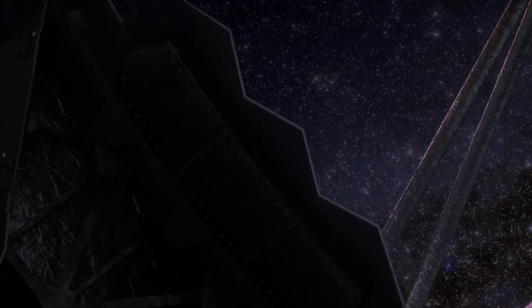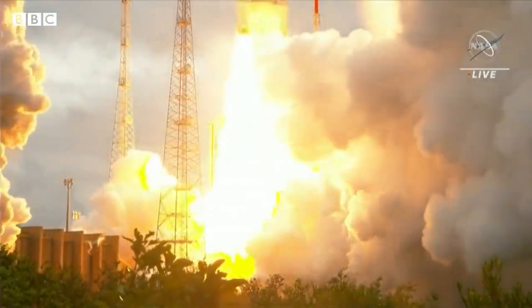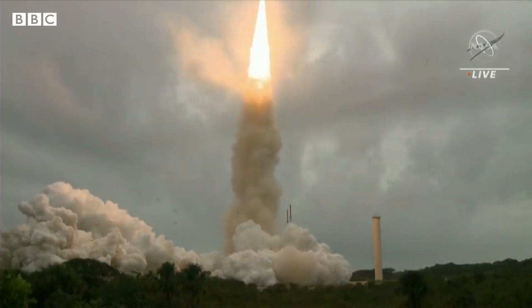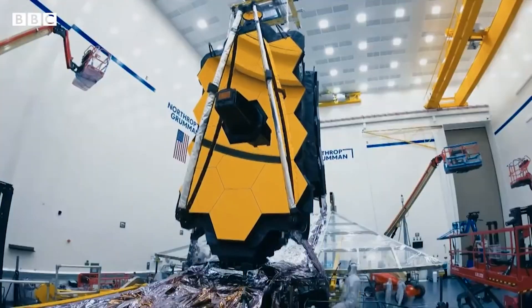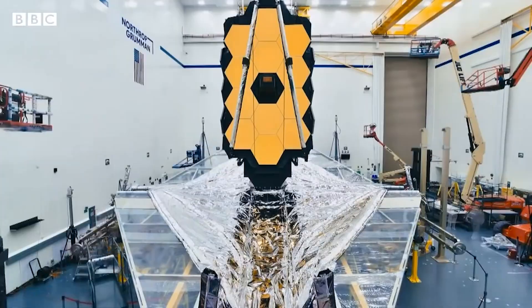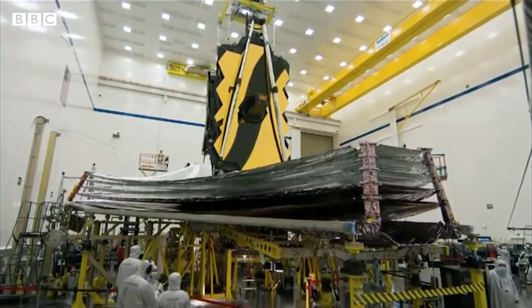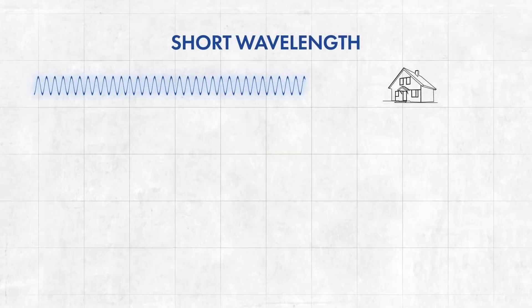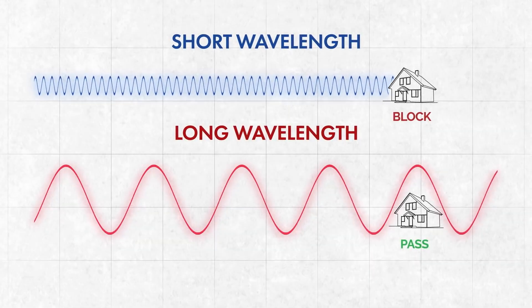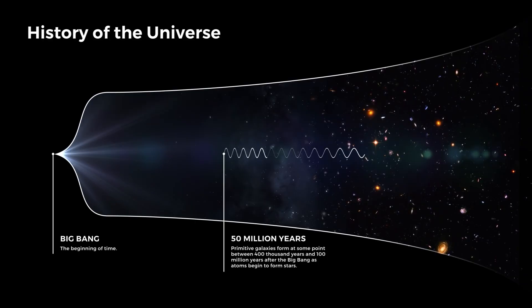The James Webb Space Telescope, or JWST, was launched aboard an Ariane 5 rocket on December 25th last year. It is so big that it had to be folded to fit in the rocket. The $10 billion observatory in space will complement and extend the discoveries of the Hubble Space Telescope, with longer wavelength coverage and greatly improved sensitivity. The longer wavelengths enable Webb to look much closer to the beginning of time and to hunt for the unobserved formation of the first galaxies, as well as to look inside dust clouds where stars and planetary systems are forming today.